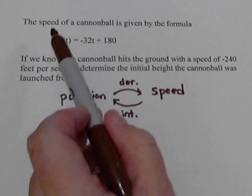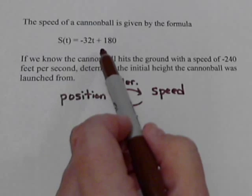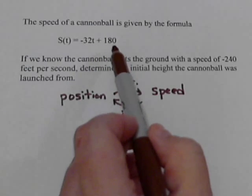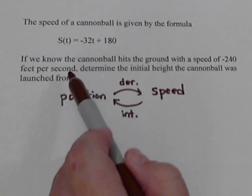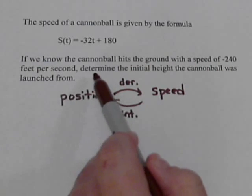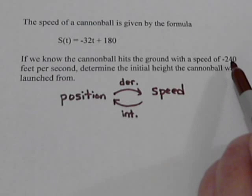So we've got a formula for the speed. The speed of the cannonball is negative 32t plus 180. And we know that the cannonball hits the ground with a speed of negative 240 feet per second. Now before we get to our question, let's see what we can do with that.